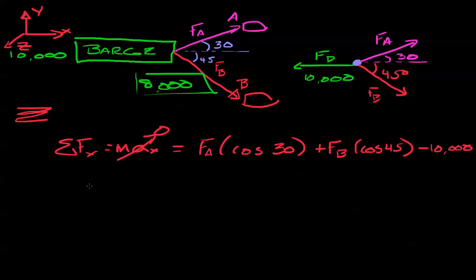Let's go ahead and get 10,000 by itself. I like having variables on one side and numbers on the other. Force A cosine 30 plus force B cosine 45. All right. Let's just keep it the way it is for right now.